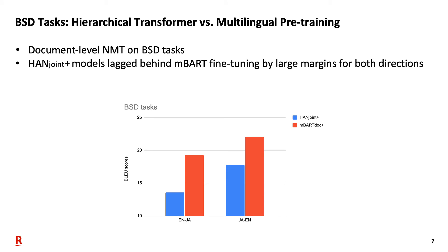In addition, we also compare the hierarchical transformer model performance versus multilingual pretraining model performance on the BSD task in document level. As you can see, under single-model decoding setting, we observed that the MBART doc-plus model could lead far ahead the HAN joint model — that is, the best performed HAN model — by 5.7 and 4.3 BLEU scores in the BSD English-to-Japanese and Japanese-to-English tasks respectively. This indicates that the advantages of pretraining are substantial in BSD tasks.